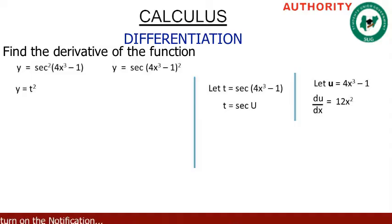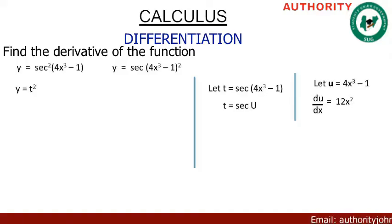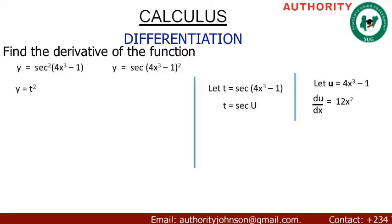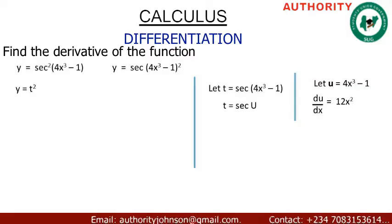In the function u = 4x³ - 1, we find the derivative of u with respect to x. The derivative of 4x³ is 12x², and the derivative of -1 is 0. So du/dx = 12x².